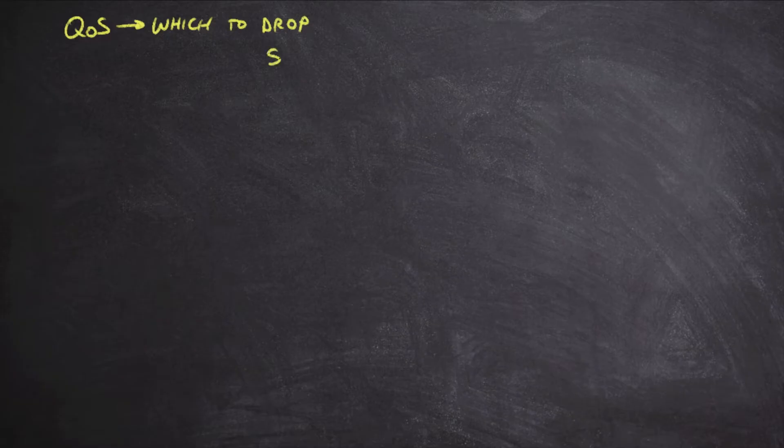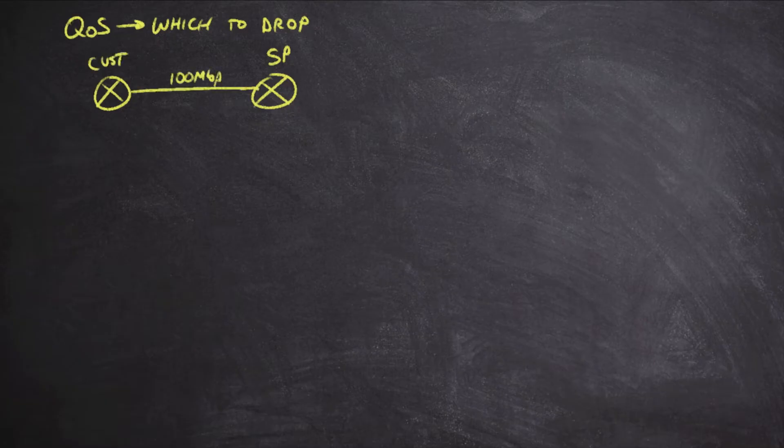Let's say we've got a service provider that's going to deploy a router here and connect down to a customer router. We're going to connect these routers at 100 megabits per second, but the customer doesn't want to pay for 100 megabits per second WAN circuit. Maybe this is going to go to the customer's other location, so instead the customer wants to pay for 50 megabits per second of WAN circuit bandwidth.